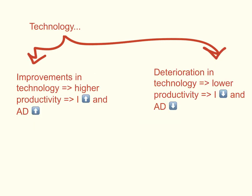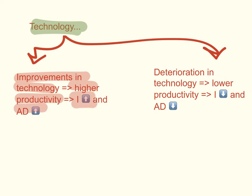The third factor is technology. If there are improvements in technology, this means there's an increase in productivity, which encourages businesses to invest more. Investment spending increases and aggregate demand will increase and shift to the right. The opposite is true: if there's a deterioration in technology and a fall in productivity, investment spending will decrease and aggregate demand will decrease and the curve will shift to the left.